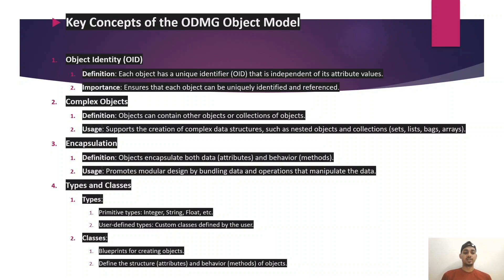Fourth, Types and Classes: Types include primitive types such as Integer, String, and Float, as well as user-defined types which are custom classes defined by the user. Classes are blueprints for creating objects; they define the structure and behavior of the object.